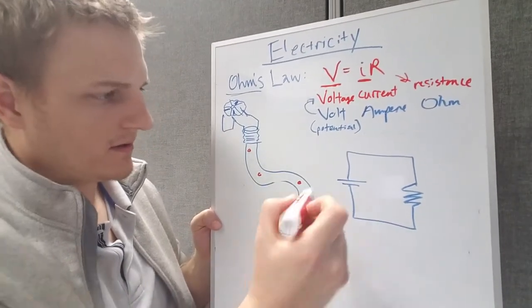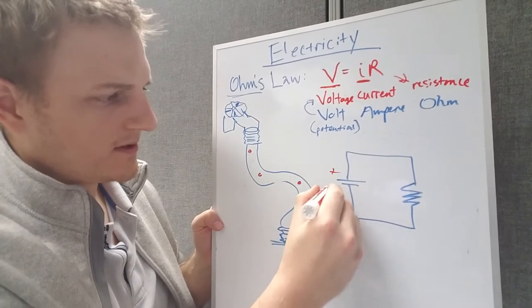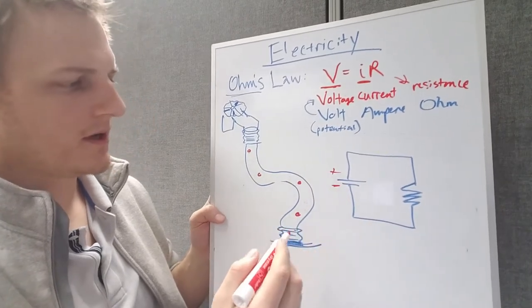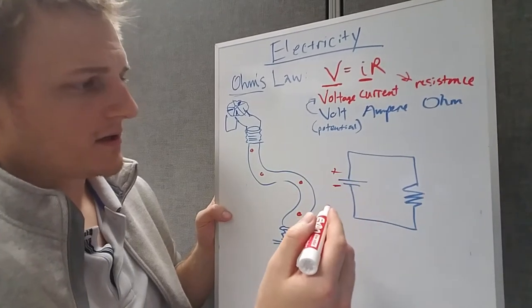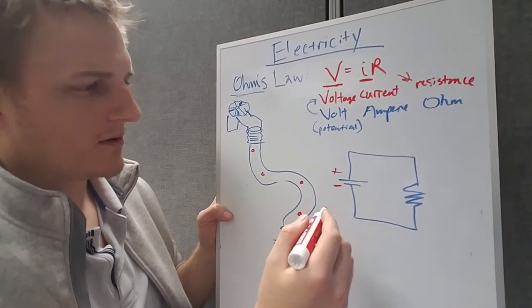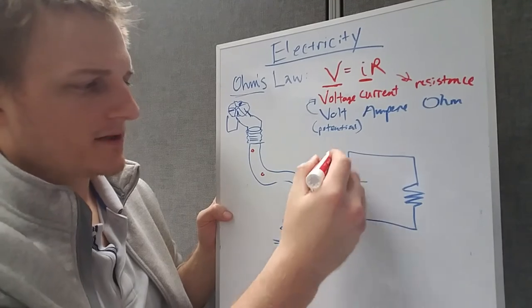And then here we can, that's positive and that's negative I might be wrong. And the charges, now I'm probably getting this backwards, flows from positive to negative.